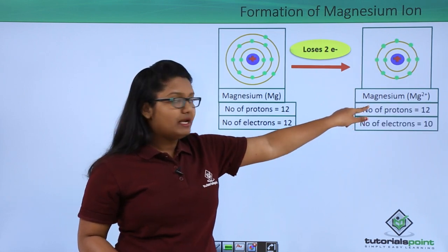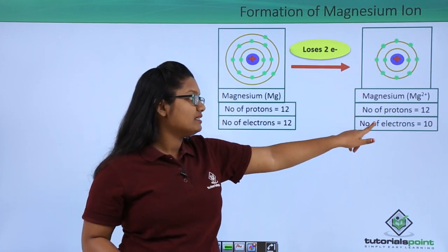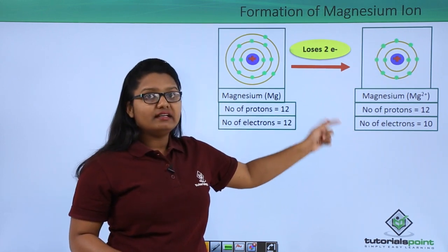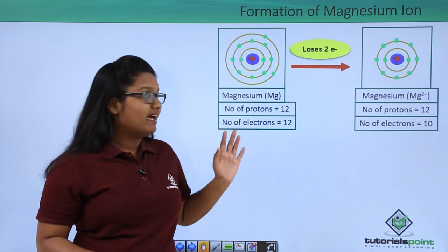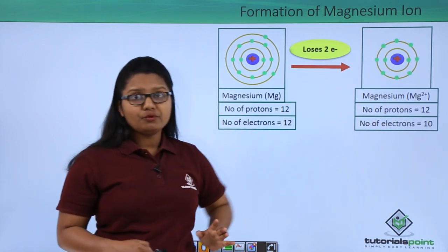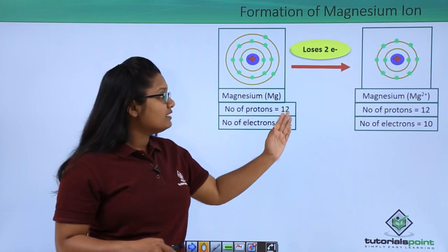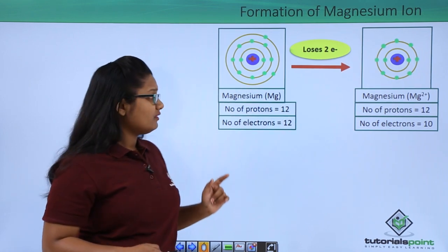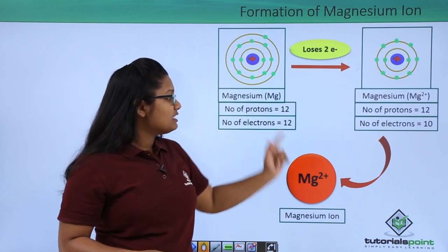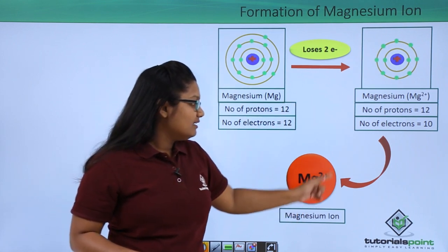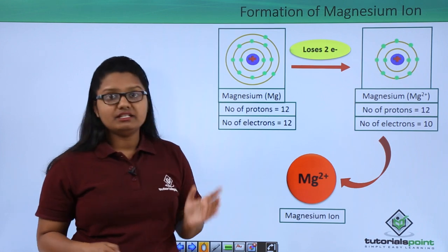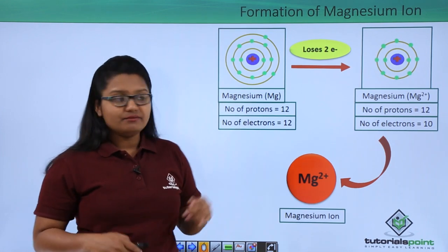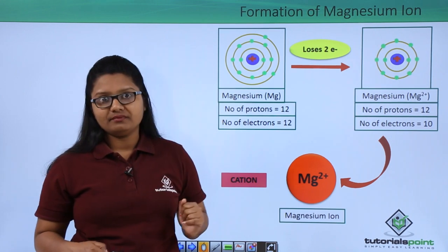After losing two electrons, the magnesium atom has 12 protons but only 10 electrons. These 10 electrons nullify 10 protons, leaving two extra protons which give it a charge of plus two. This positively charged magnesium atom is the magnesium ion, and since it is positively charged, we call it a cation.